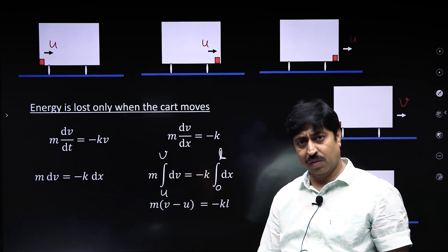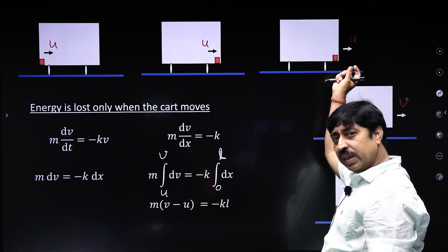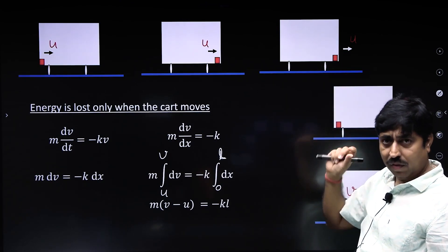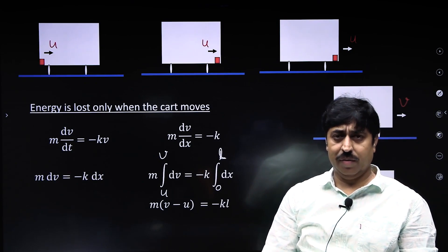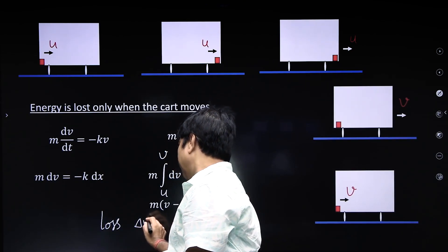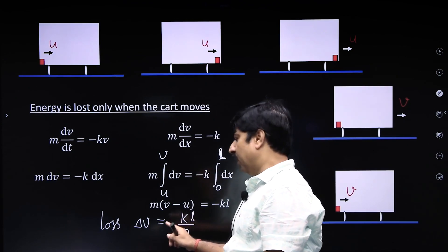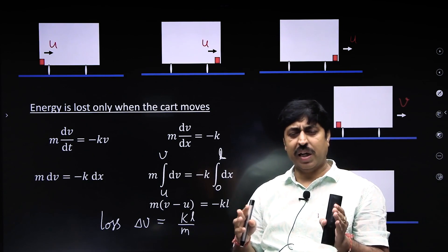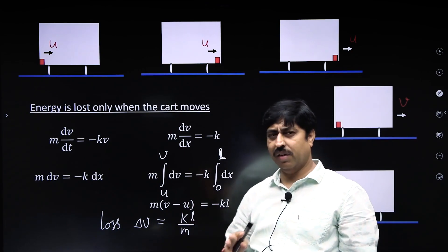So m(v - u) = -kl. This means after the cart acquires velocity u and travels a distance l before hitting the block again, it loses velocity. The loss in velocity, delta v, is kl/m. The minus sign shows that v has decreased, so the loss in velocity is simply kl/m.